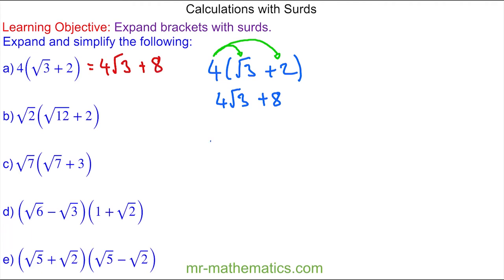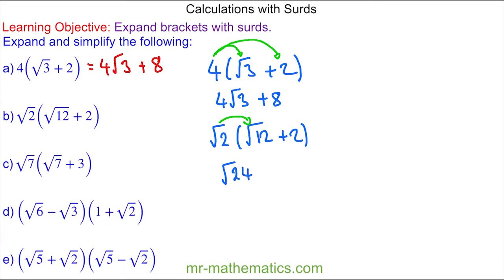For question B we have root 2 on the outside, with (root 12 plus 2) on the inside of our bracket. Again we multiply the outside term by every inside term. So we have root 2 times root 12, which is root 24, since 2 times 12 is 24. And root 2 times 2, which is 2 root 2.